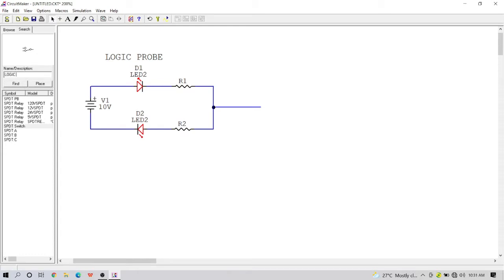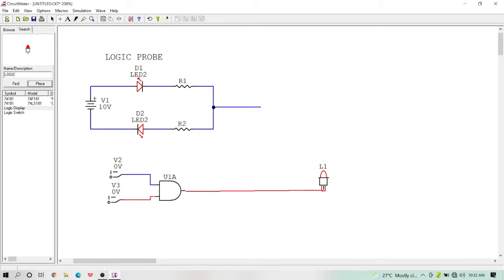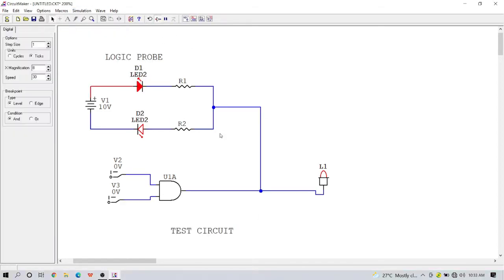Now for the test circuit, I use the AND gate, in which the output will be high when both inputs are also high. Now, connect the probe tip to the circuit, and let's get testing.